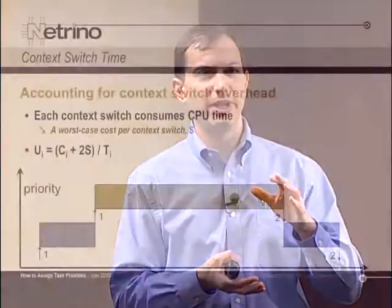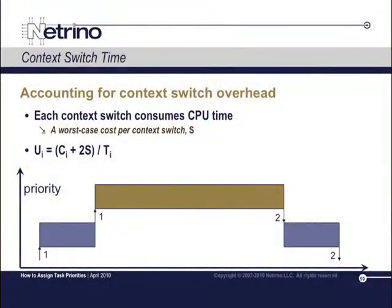So you get that number, and let's call it S. This should be a relatively small number — we're talking about nanoseconds, that kind of thing — but it depends on your processor speed. Now the question is, how many of those context switches happen?